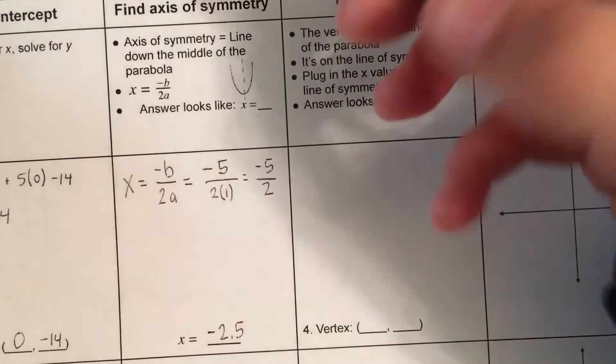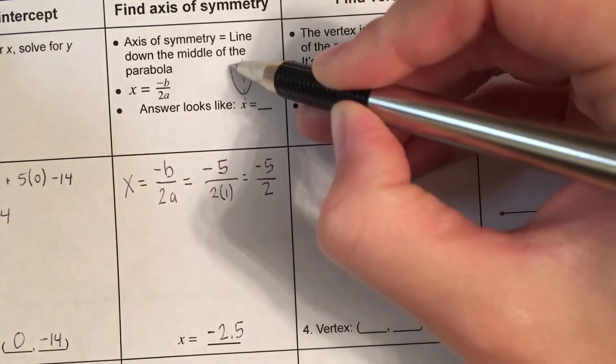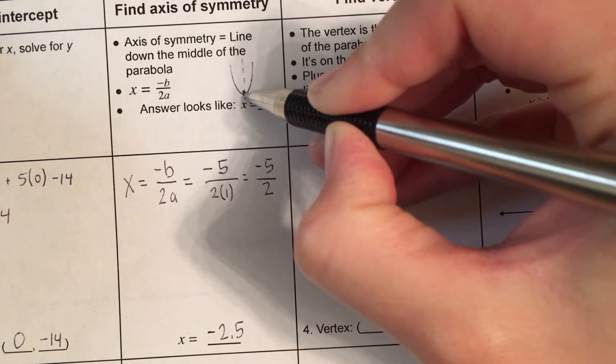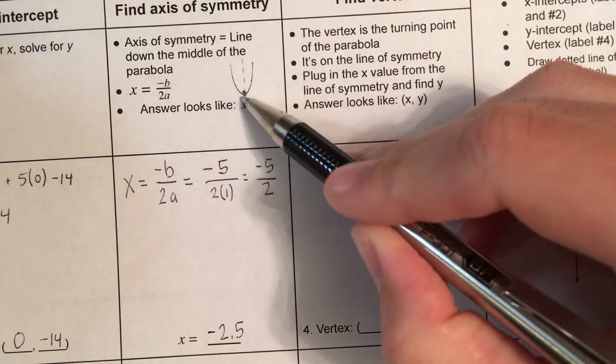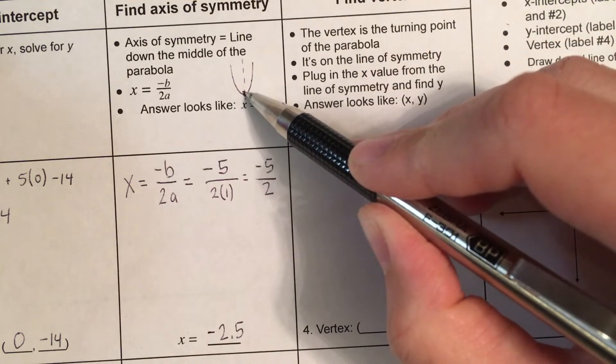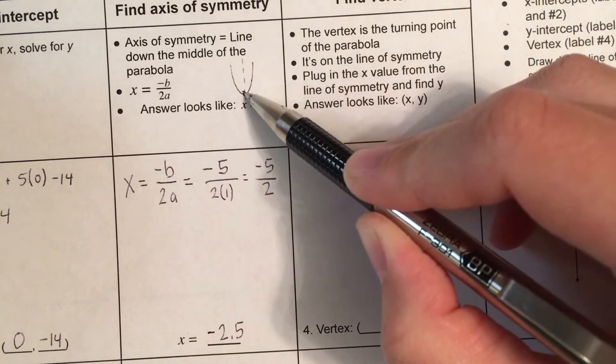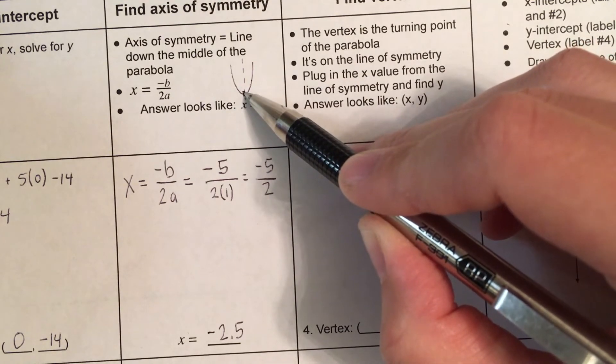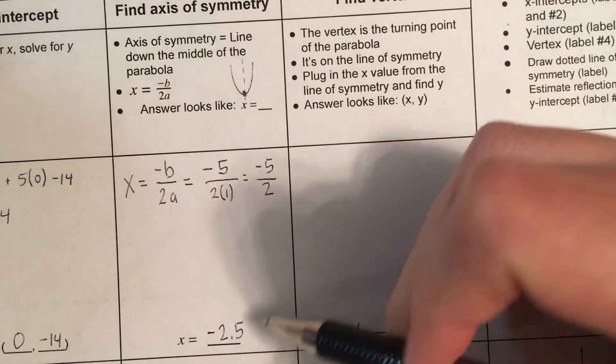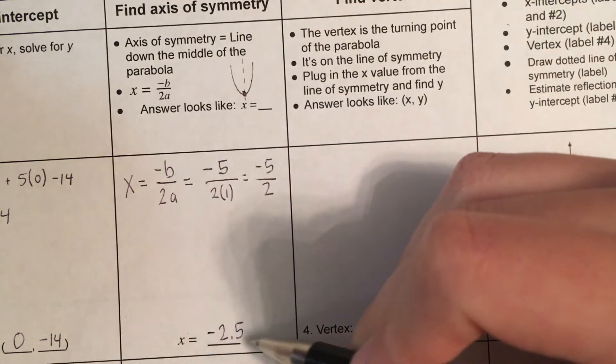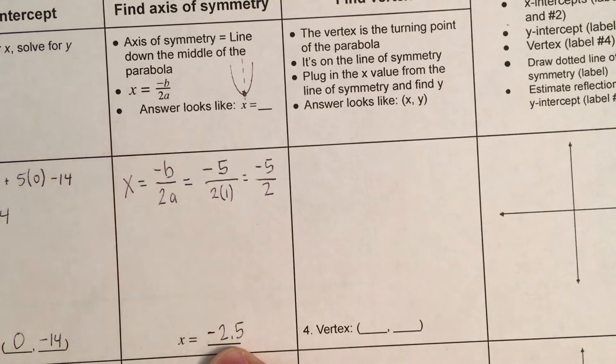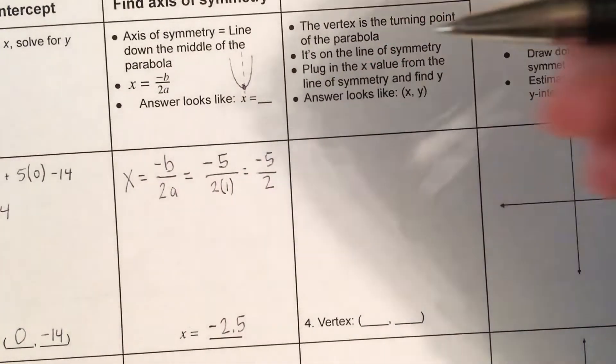Now, what you'll notice is that axis of symmetry divides the parabola in half. And this point on the parabola is called the vertex. That is sort of the turning point of the parabola. And it lies on the axis of symmetry. So, what's cool about that is that we know what the x value of this point is. It's negative 2.5. So, we're going to plug that in.